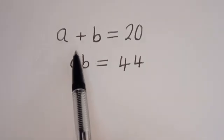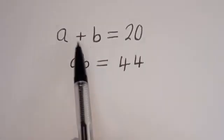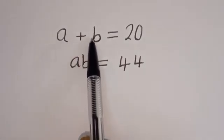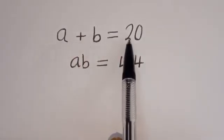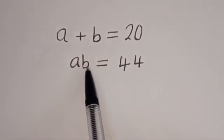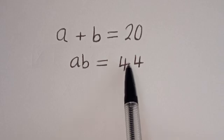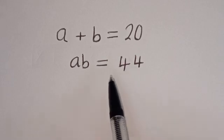Hello. How to solve for A and B in this equation? A plus B is equal to 20, and A times B is equal to 44.